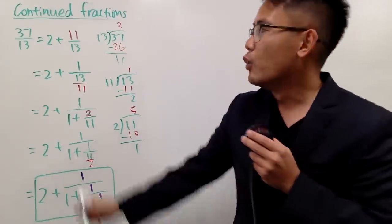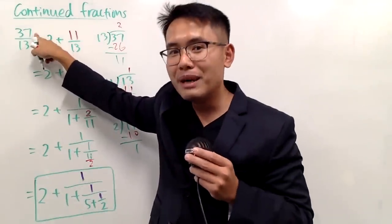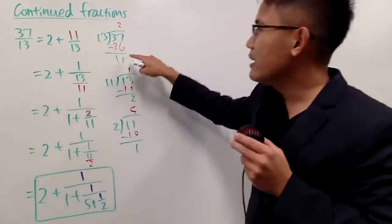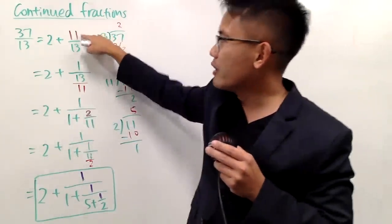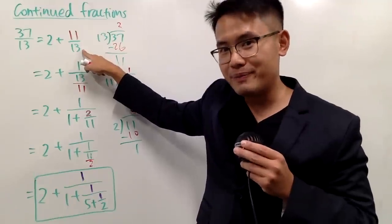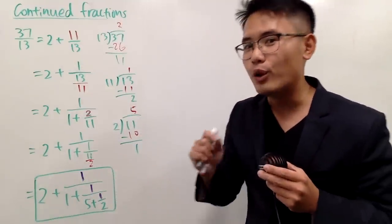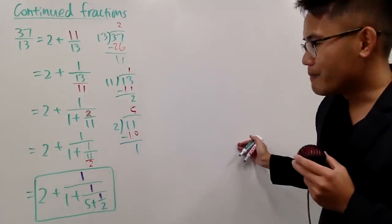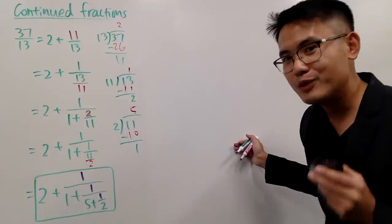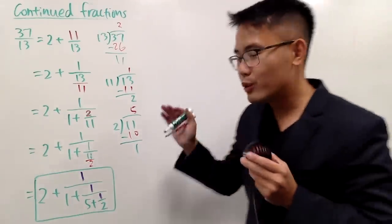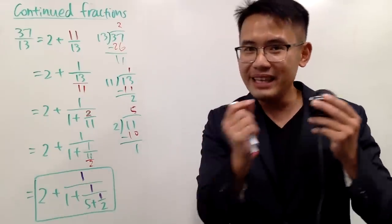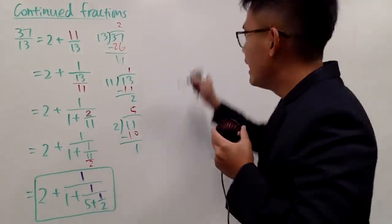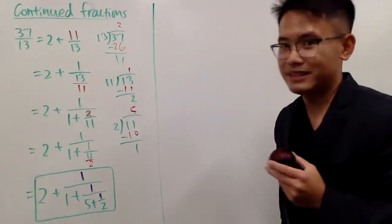Only rational numbers have this kind of property. One quick way to see this: when we have a rational number, we must have an integer over a non-zero integer, and when you divide, the remainder has to be smaller than that integer. Of course, this process will have to stop at some point — finite many steps only. However, when we don't have rational numbers, if you want to write that irrational number in simple continued fraction form, you will end up with an infinite amount of terms.